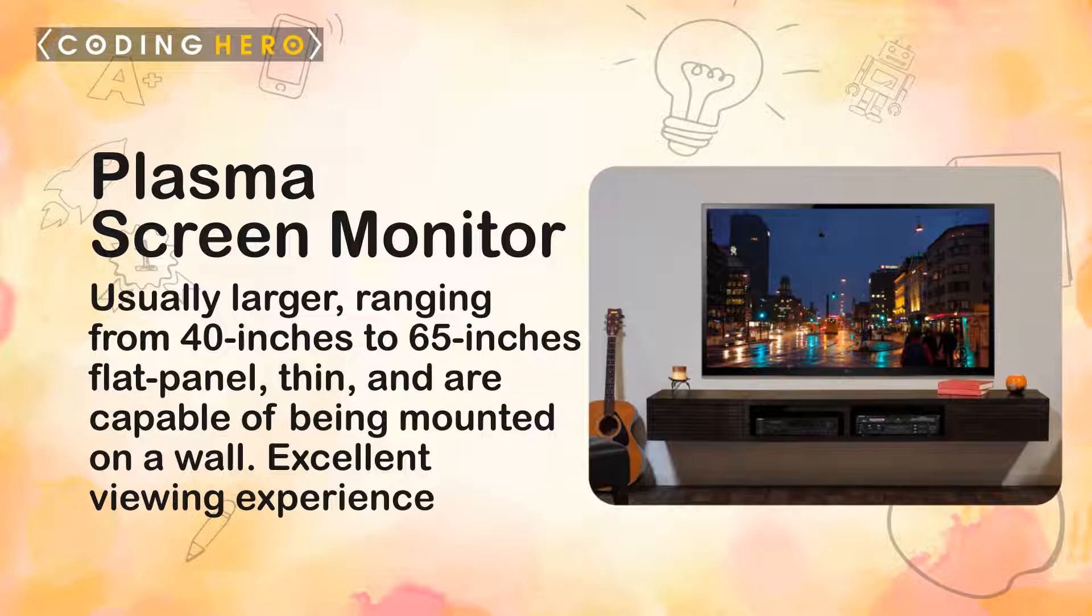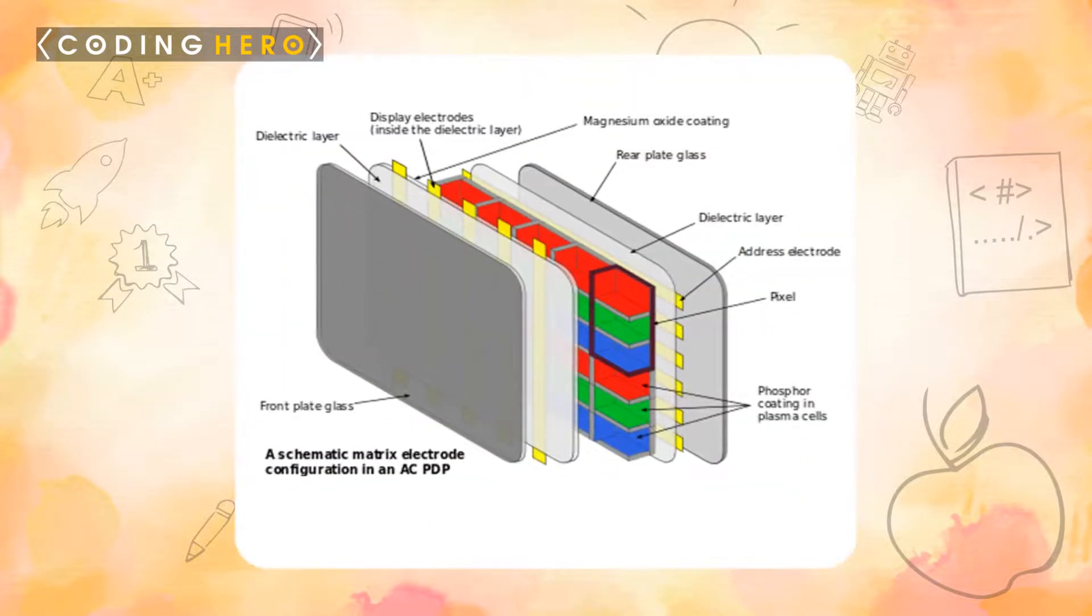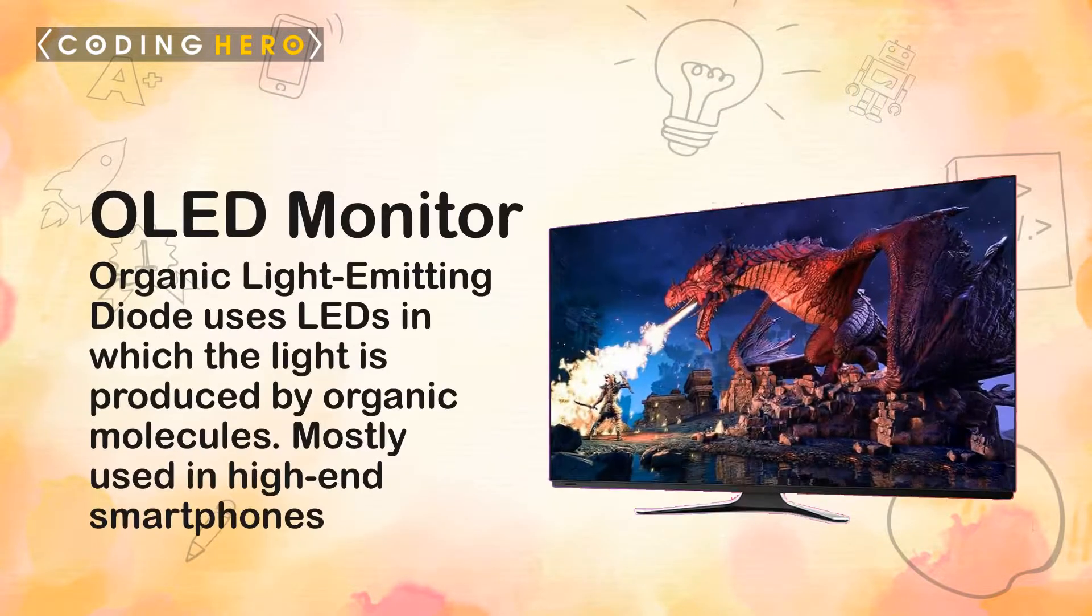A plasma screen is made up of many tiny cells containing noble gases and a tiny amount of mercury. These cells are between two pieces of glass, and electricity is passed through the cells, causing the gases to turn into plasma. Light is then emitted, generating a picture on the screen.